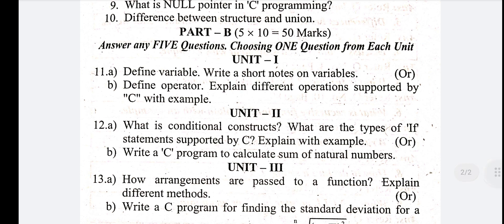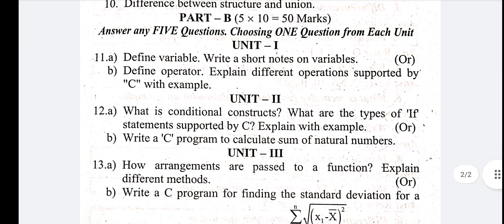Now choose Part B — 10 marks questions. You can choose 5 units from one unit, so you can choose any answer for 50 marks. Unit 1, first question: define variable, write short notes on variable. Define variable, explain what a variable is with a short note and example programs. You can write this for 10 marks.